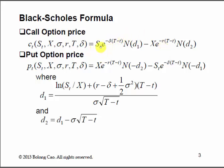We need to think about what N(d1) and N(d2) are. N here is the cumulative distribution function of a standard normal distribution, which comes from the assumption that the underlying stock price follows a log-normal Wiener process. We will have a closer look at that, but we won't get into the full theoretical details.